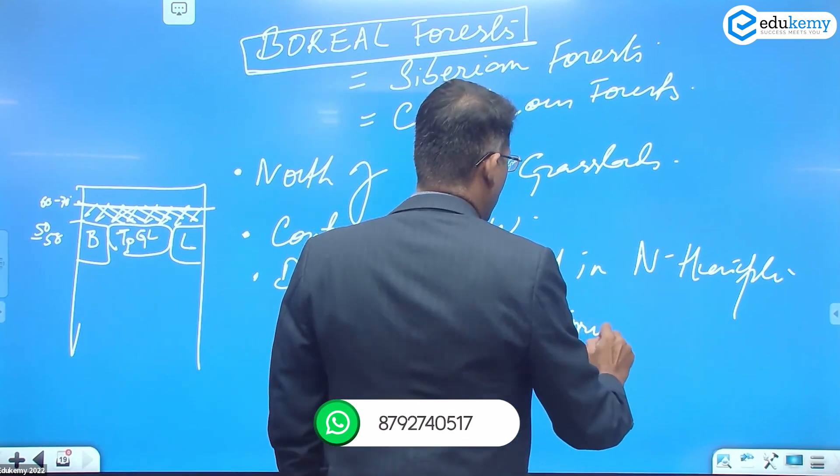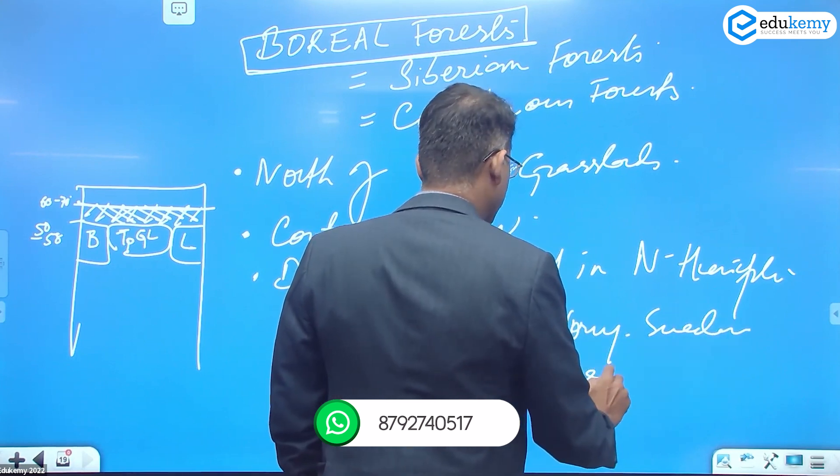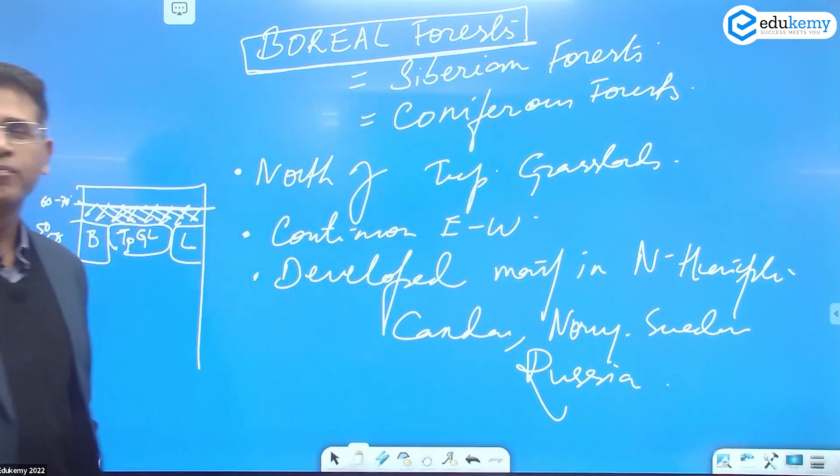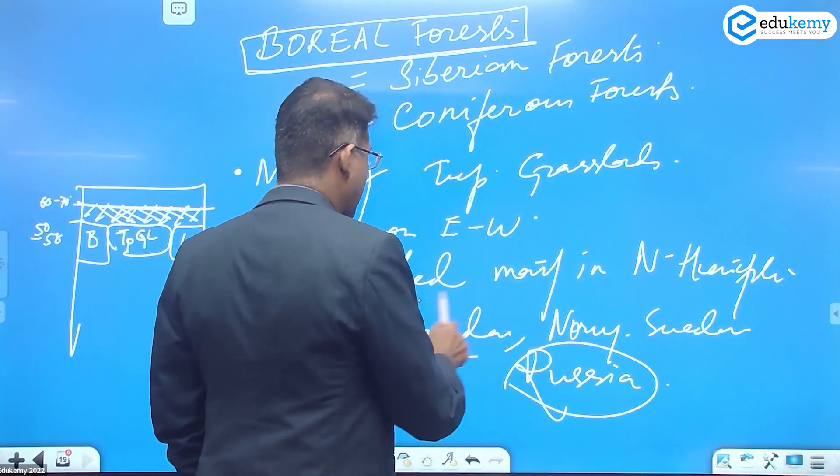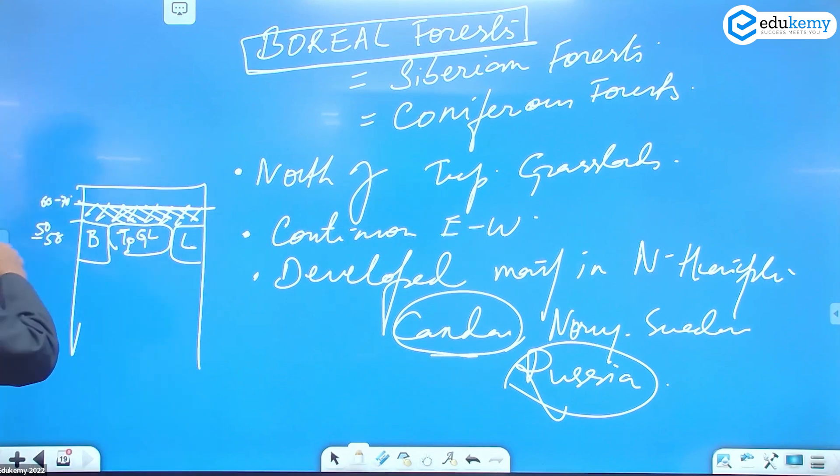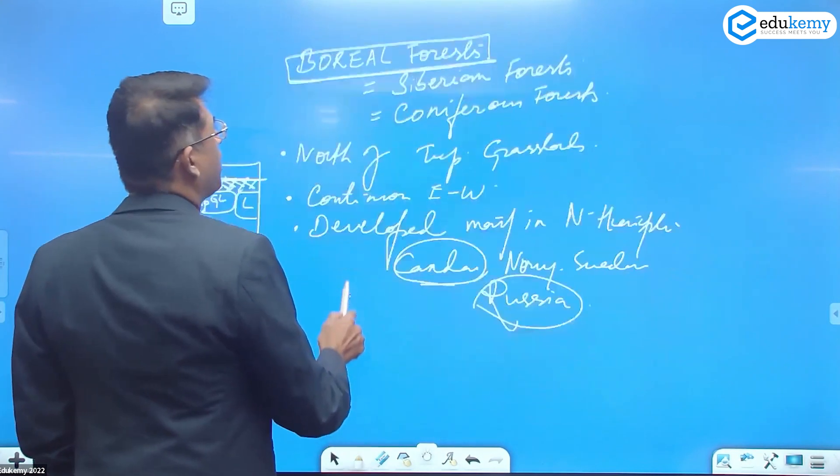We find this in Norway, Sweden, and of course the extensive Russia. The largest stretch is Russia or Canada, continuous east-west.